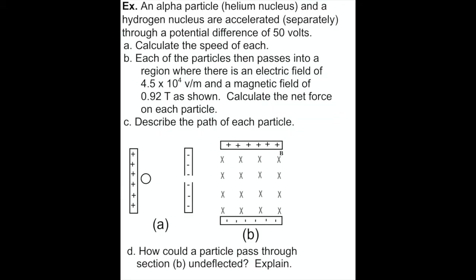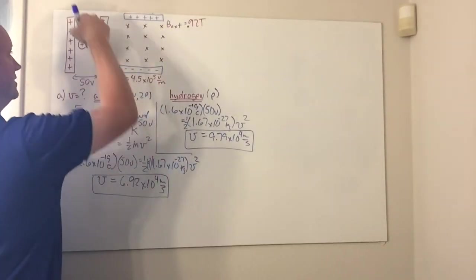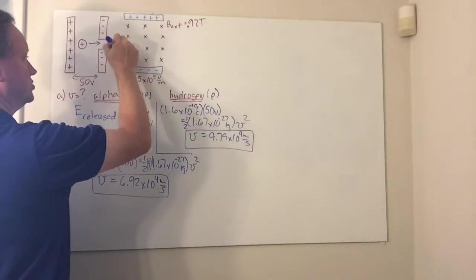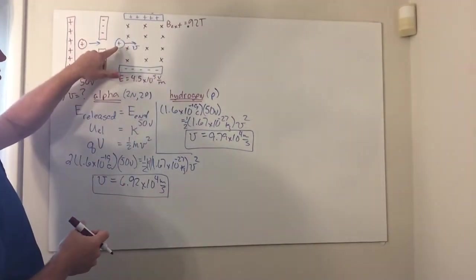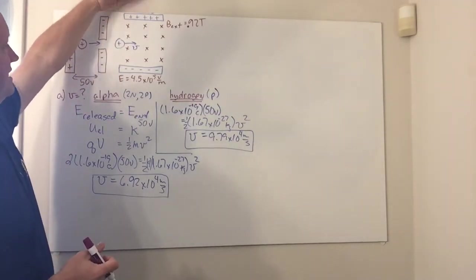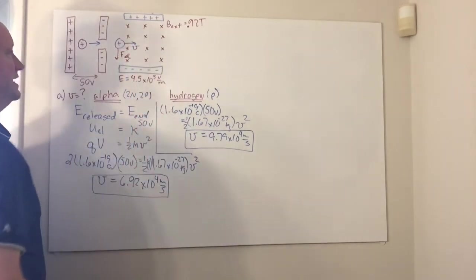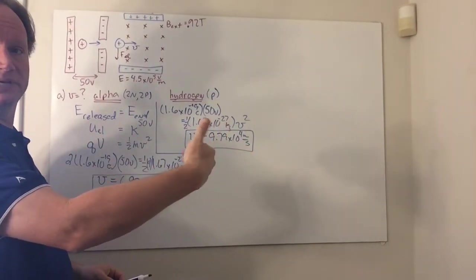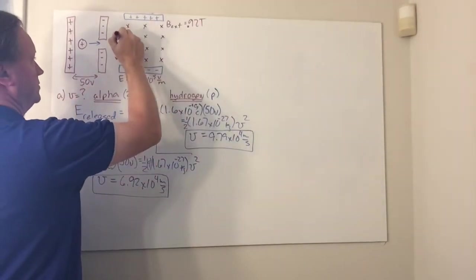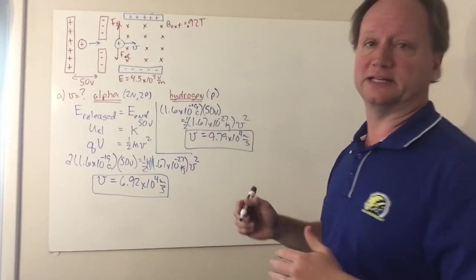In part B, each particle passes into the region with the electric field and magnetic field, and we want to calculate the net force on each particle. A positively charged particle entering with a certain velocity — with a positive plate and negative plate — experiences an electrostatic force in the downward direction. The magnetic force QV cross B, with V along the board and B into the board, gives an upward magnetic force. So we have an upward magnetic force and a downward electric force.